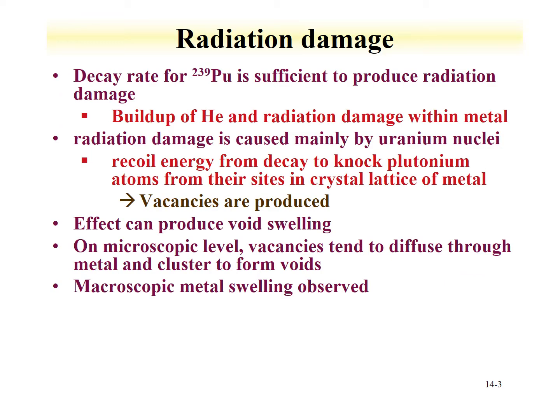We left off previously discussing plutonium metal, discussing corrosion properties. We want to continue this discussion in the fact that plutonium is radioactive. Radiation damage can be induced in plutonium metal, and the decay rate of plutonium-239 is sufficient for the production of radiation damage. This can include the buildup of alpha particles, or helium, in the material, and radiation damage due to the emission of the alpha particle and the recoil of the uranium daughter.